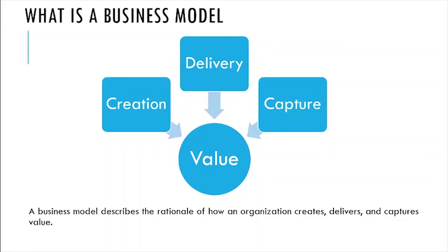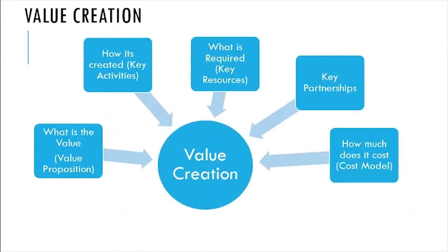The business model canvas has nine segments, divided into three main areas: how we create value, how we deliver value, and how we capture it back — because it's not only give, it's take also. Creating value starts with understanding our value proposition.